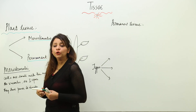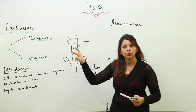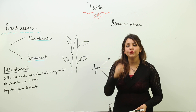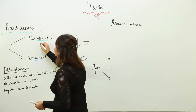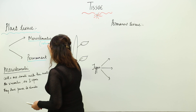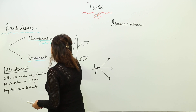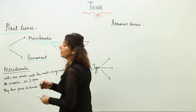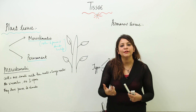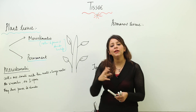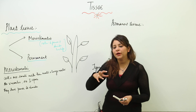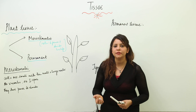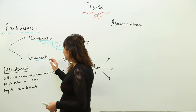Both categories consist of cells, but the difference is that meristematic cells retain their power to divide throughout life. Their main function is to divide continuously and give rise to new cells — they keep on dividing and producing new cells throughout their life.